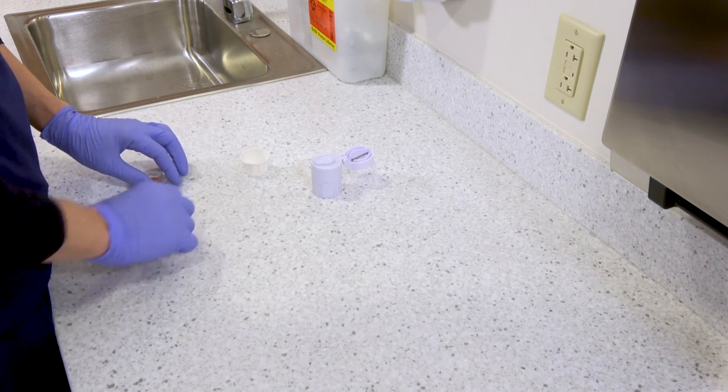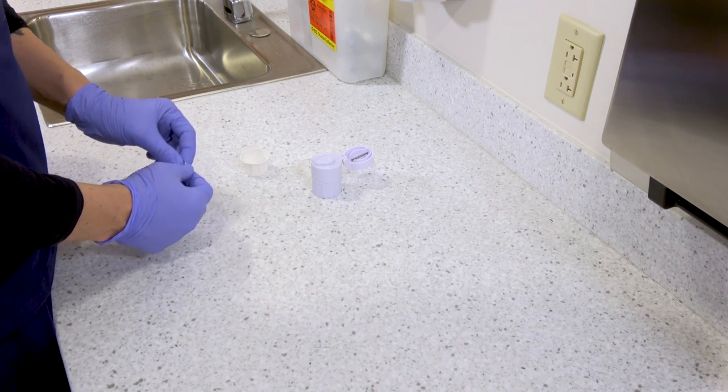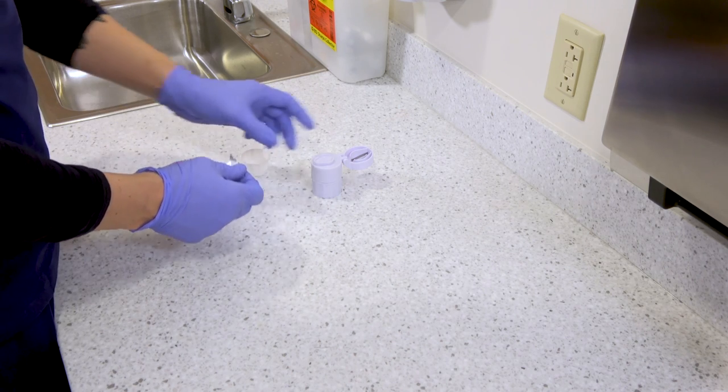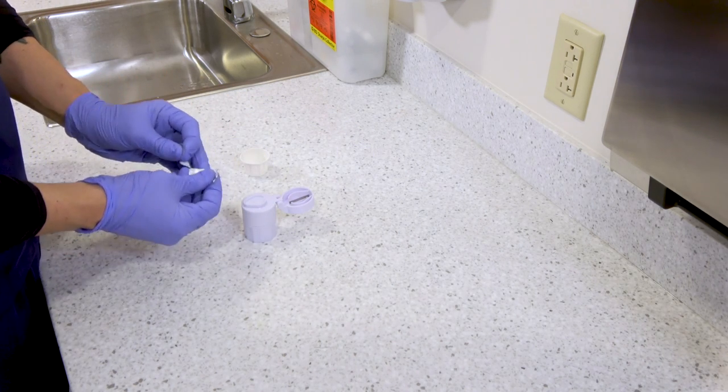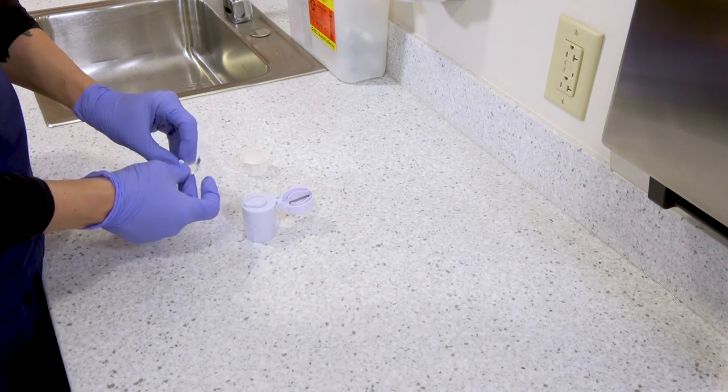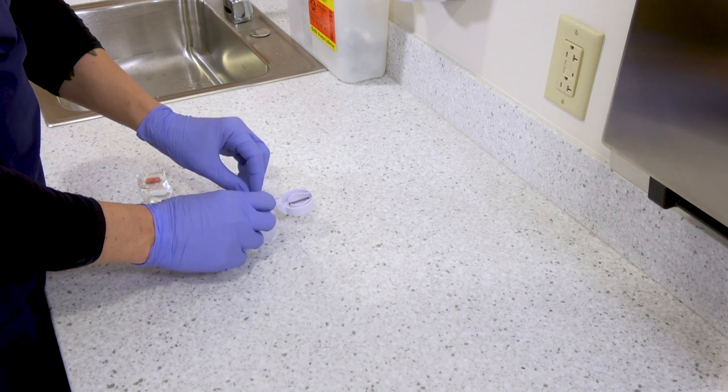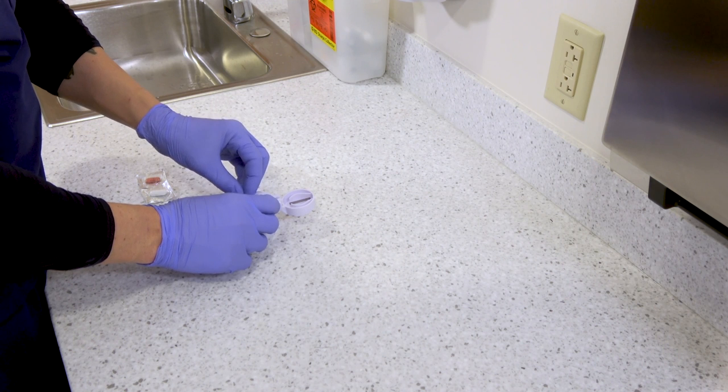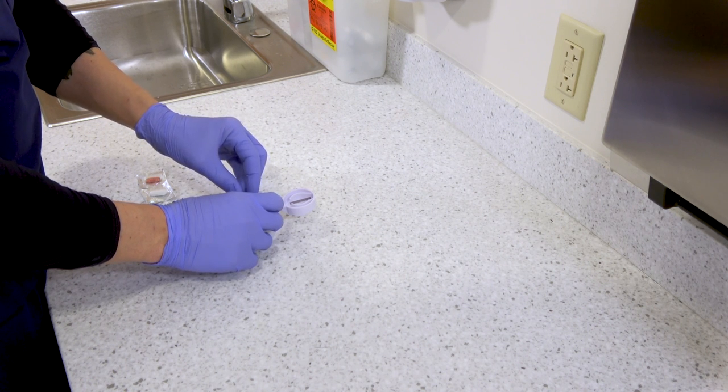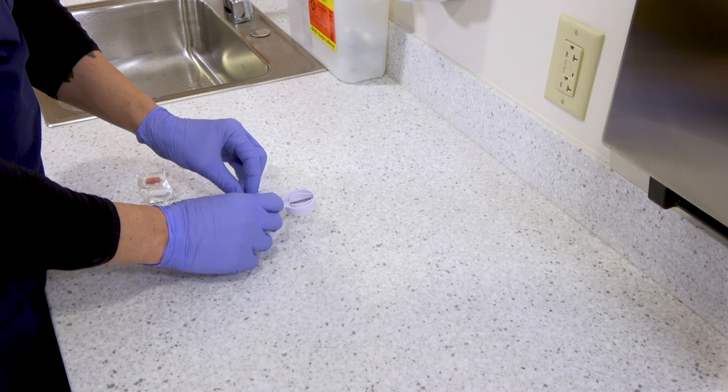If the provider order calls for a half tab, open the pill cutter and remove the pill from its packaging. Carefully place the pill in the cutter and turn it so that the scoring line lines up with the blade. Be careful not to cut your finger.